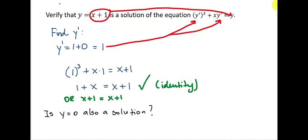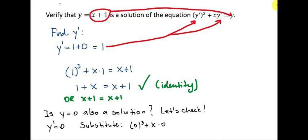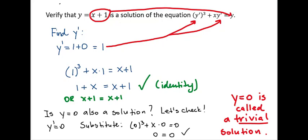Here's a quick question: is y equals 0 — which is a simple constant function — also a solution? Let's check. If y equals 0, then y prime is also 0. Substituting: 0 to the third power plus x times 0 equals 0, and on the right-hand side y is 0. The left-hand side is 0 and the right-hand side is 0 — that's an identity. So y equals 0 is a solution, but it's not a very interesting one. This kind of solution is called a trivial solution of the differential equation.